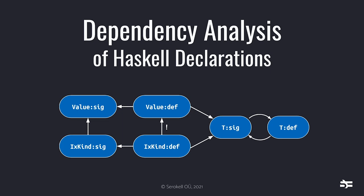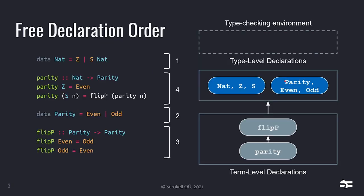In other languages like C, Java, and even some functional ones like OCaml, you have to write declarations in a specific order. For example, in C you can't call a function before you declare it. But in Haskell this is not the case — you can write a declaration wherever you want and use it everywhere.